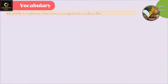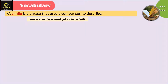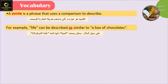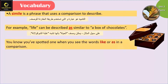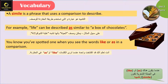The second one is a simile. A simile is a phrase that uses a comparison to describe. إذن التشبيه بيستخدم طريقة المقارنة ليوصف الشيء. For example: life can be described as similar to a box of chocolates. هون عم نقارن الحياة بعلبة الشوكولات. You have spotted a simile when you see the words 'like' or 'as' in a comparison — نقدر نميز السيملي من كلمة as أو like بالجملة.